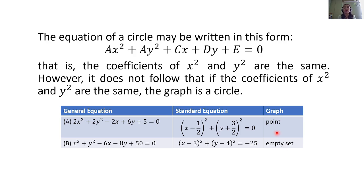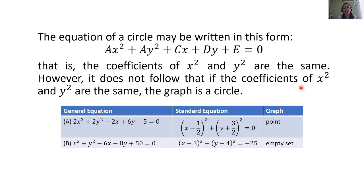When we find its standard equation, it gives us: the quantity of x minus 3 squared plus the quantity of y minus 4 squared is equal to negative 25, which gives us an empty set. So although these equations follow that form, we have to verify — we have to check using the standard equation.